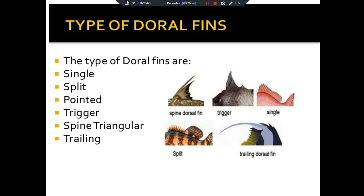Dorsal fins can be of different shapes: single, split, pointed, trigger-like, spine or triangular, single-spine, trailing rod-like with small rounded appearance. There are different modifications in different fish species. The shape of the dorsal fin varies considerably across species.